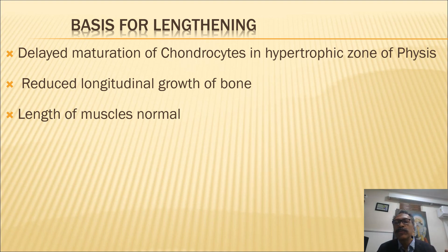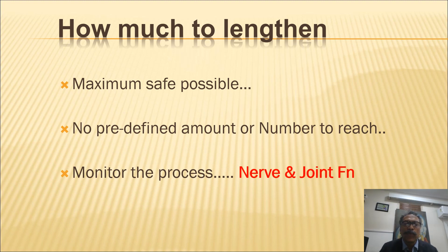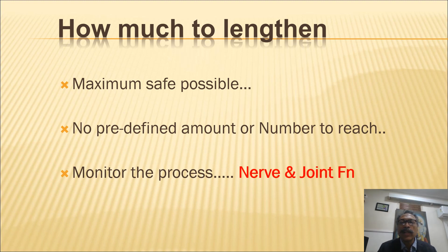There is delayed maturation of chondrocytes in the hypertrophic zone of the physis, which reduces longitudinal bone growth, but the length of the muscles is normal. From clinical experience, most resistance to lengthening comes from tight muscles, aponeuroses, or fascia. In these patients the possibility of lengthening improves because they have redundantly long muscles. Our pragmatic philosophy says we lengthen the maximum safe amount possible, but we do not have a predefined number to reach. Most importantly, we monitor nerve and joint function throughout to ensure no neurological problems, joint tightness, contractures, or deformities.